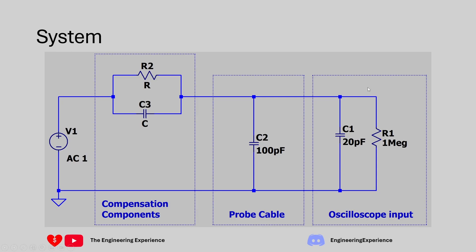The oscilloscope input is a 1 megaohm resistor — a non-frequency-dependent component — in parallel with the 20 picofarad capacitor, which is a frequency-dependent component. The probe cable is represented by the 100 picofarad capacitor in parallel with this oscilloscope input, and then our compensation network looks like the opposite of what we have on the scope side. The input signal is represented by a voltage source, and the circuit was drawn and will be simulated in LTSpice.